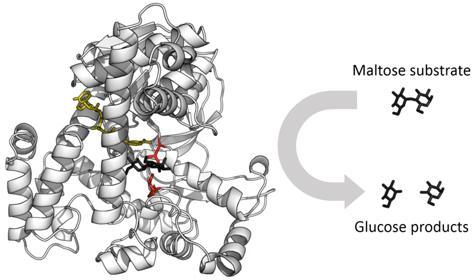Examples of post-translational modification include phosphorylation, myristoylation and glycosylation. For example, in the response to insulin, the phosphorylation of multiple enzymes including glycogen synthase helps control the synthesis or degradation of glycogen and allows the cell to respond to changes in blood sugar. Another example of post-translational modification is the cleavage of the polypeptide chain. Chymotrypsin, a digestive protease, is produced in an inactive form as chymotrypsinogen in the pancreas and transported to the stomach where it is activated. This stops the enzyme from digesting the pancreas or other tissues before it enters the gut. This type of active precursor to an enzyme is known as a zymogen or proenzyme.